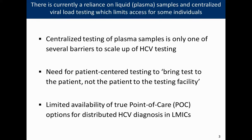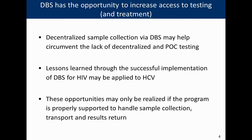There is currently a reliance on liquid or plasma samples and centralized viral load testing, which can limit access to testing and subsequently treatment. Centralized testing of plasma samples is only one of several barriers to scale-up of HCV, but it is an important one. There is a recognized need for patient-centered testing — to bring the test to the patient, not the patient to the testing facility. There is currently limited availability of true point-of-care options for distributed HCV diagnosis in many LMICs.